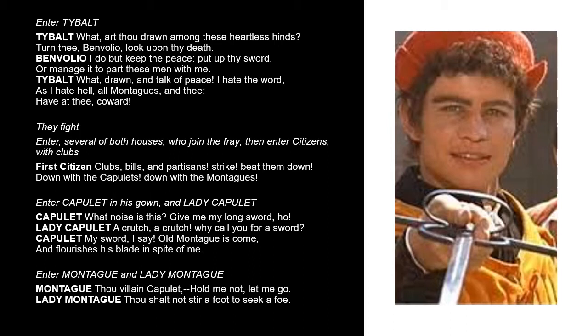As the fight continues, it escalates. Soon more servants start coming on stage from each side and joining the fight. Then the citizens come in with clubs — this is sort of like the town watch. The neighborhood watch catches word that there are Capulets and Montagues fighting in the streets. And this is what they say as they come in and start whacking people with clubs: 'Clubs, bills, and partisans! Strike! Beat them down! Down with the Capulets! Down with the Montagues!' So you've got Montagues who hate the Capulets, Capulets who hate the Montagues, and then the rest of the citizens of Verona — and how do they feel? They hate them both. They want to kill them both. Now you've got a full-scale riot in the marketplace.